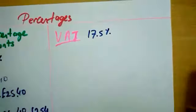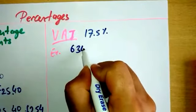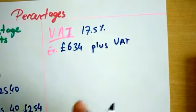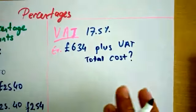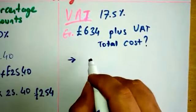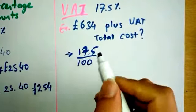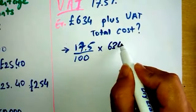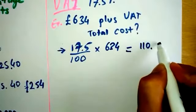For example, if the cost of the computer is £634 plus VAT amount, and we need to find the total cost: VAT is 17.5%, so the first step is to calculate 17.5%. You can do 17.5 out of 100 and multiply it by the value itself, which is £634. Once you put this in your calculator, you will get £110.95.